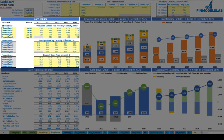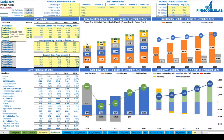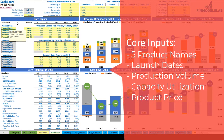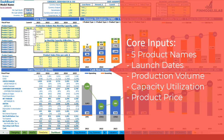Let's start from the core inputs. On the top left section you have up to five product types or groups. All the yellow cells are changeable, so you can set up product A, product B, or any other name you would like. The next step is to set up the launch date or start of production for each of these product types. You can use the dropdown and set any month within this five-year model.